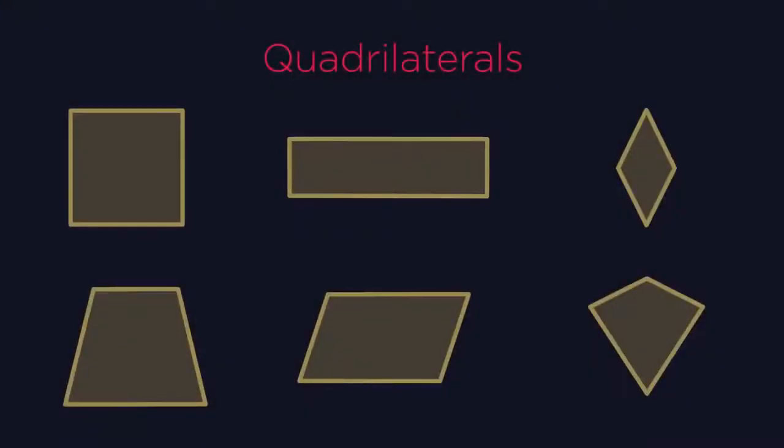What do these shapes all have in common? They're all two-dimensional shapes with four sides and four angles. These are known as quadrilaterals.